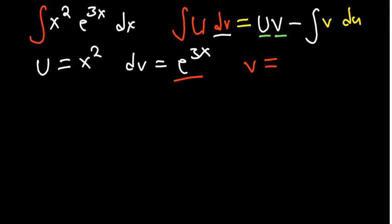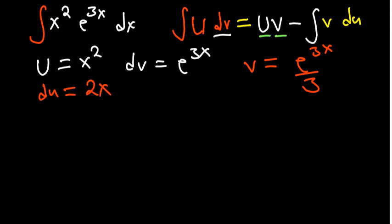To integrate exponential functions, we divide by the derivative of the power. The power is 3x, and the derivative of 3x is 3, so v equals e to the power 3x over 3. For differentiating exponentials it's the opposite — you multiply by the derivative of the power. We also need du, which is the derivative of u, giving us 2x.